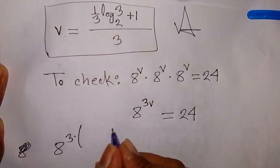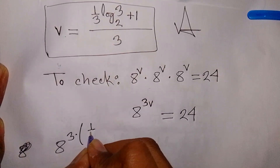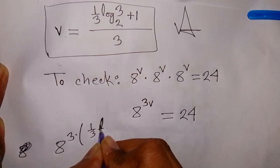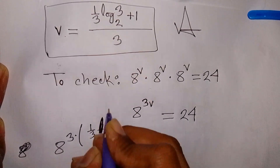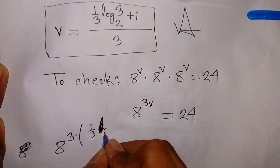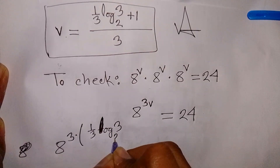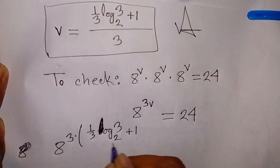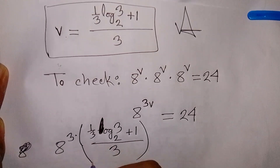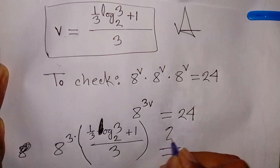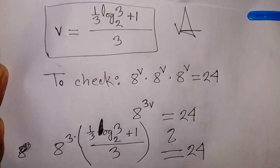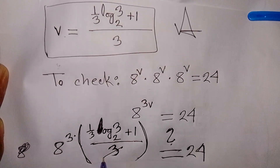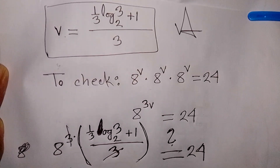Substituting V equals one-third·log base 2 of 3 plus 1 over 3 into the expression, we can combine the three identical terms. This 3 and this 3 cancel, simplifying the exponent.